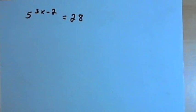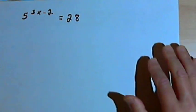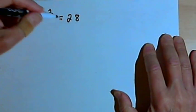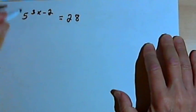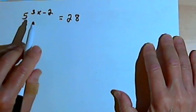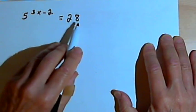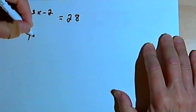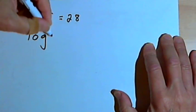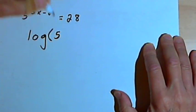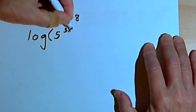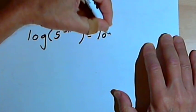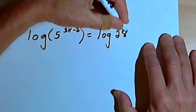Here's our first equation: 5 raised to the 3x minus 2 equals 28. The whole trick to solving equations like this is to take the logarithms of each side of the equation. So I'm going to take this and make it into the log of 5 to the 3x minus 2 equals the log of 28.